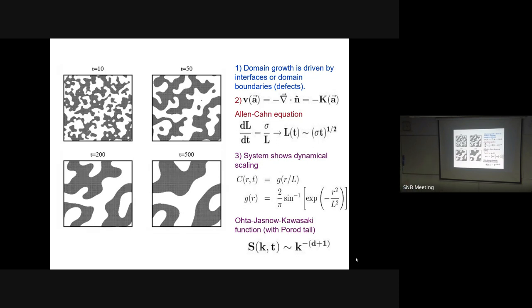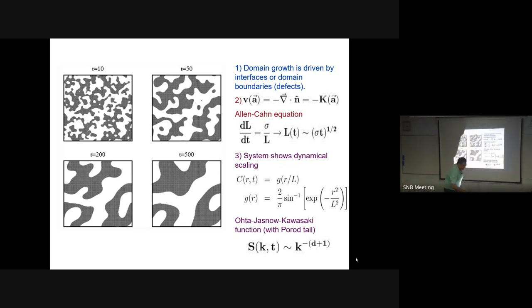We spent time deriving the master equation for global kinetics and derived the DDGL equation which applies in this case. The DDGL equation is not analytically tractable. The next step was finding approximate solutions from this random initial condition. The key concept is that domain growth is driven by the system's desire to get rid of interfaces or domain walls - these are called defects in the system.